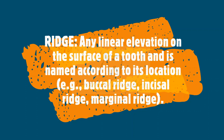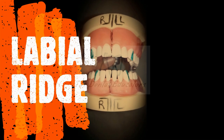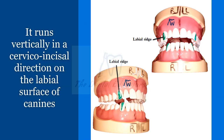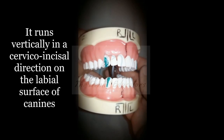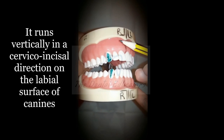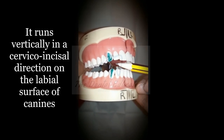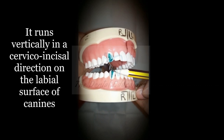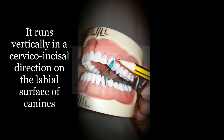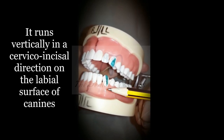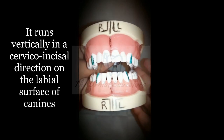The first type of ridge is the labial ridge, which runs vertically in the cervical-incisal direction on the labial surface of the canine. The green marked areas on the canines represent the labial ridges. Labial ridges are found only on canines, running from the cervical line towards the incisal edge in both the maxillary and mandibular arch.